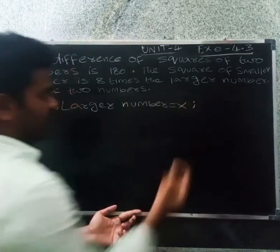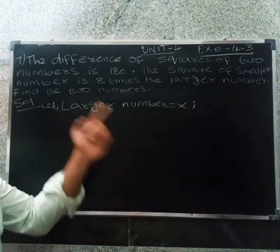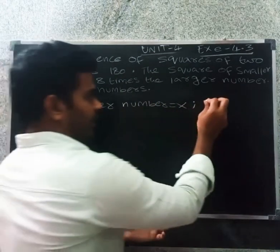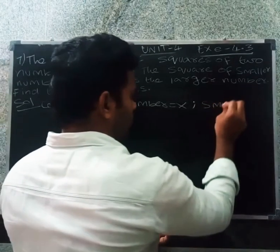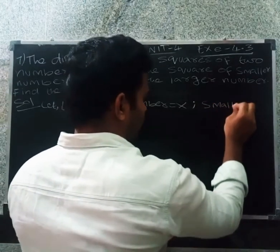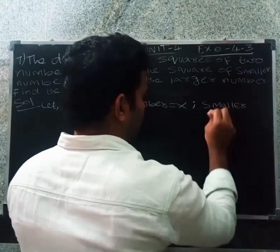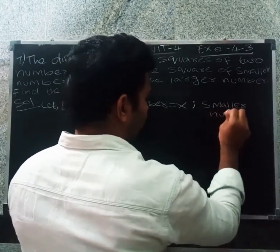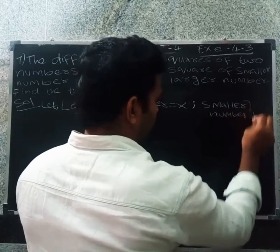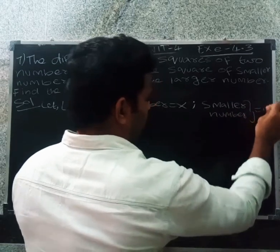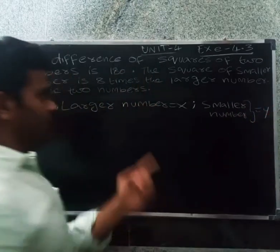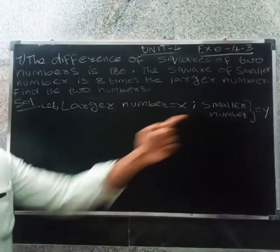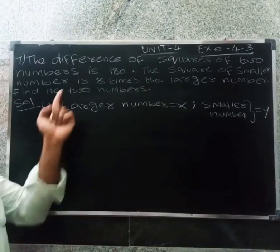Let the smaller number be equal to y. So the smaller number is equal to y.